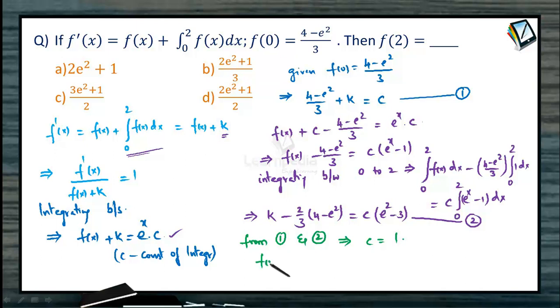When we get c as 1, can we write f of x now? Yes, we have a function f of x involving only c. What happens to the f of x equation using c equals 1? We get f of x as e power x minus e squared minus 1 by 3. Now what is required? We need f of 2, which would be e squared minus e squared minus 1 by 3, or 3e squared minus e squared, that is 2e squared plus 1 by 3.